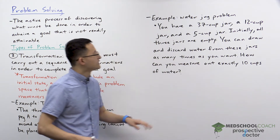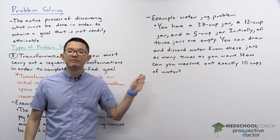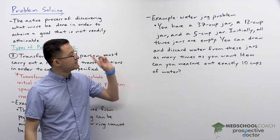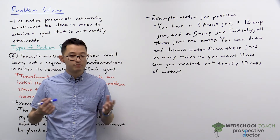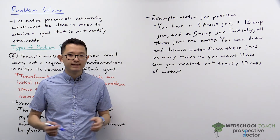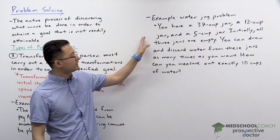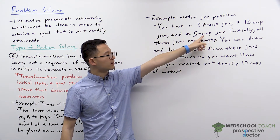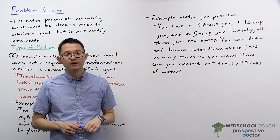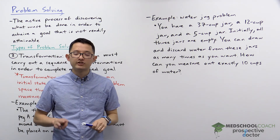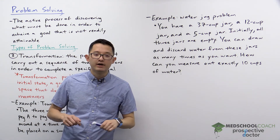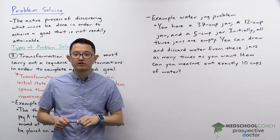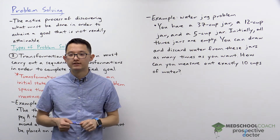Now let's take a look at another example of a problem of transformation. This is the water jug problem, which is pretty famous. In this case, you're given a 37-cup jar, a 12-cup jar, and a 5-cup jar. These three jars are initially empty, but you can draw and discard water from these jars as many times as you want.